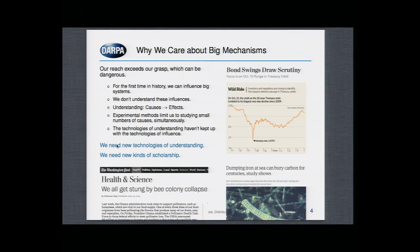Flash crashes are caused by automated trading systems that we don't really understand. In a lot of important domains, we have what we might call component-level understanding, but not system-level understanding. We understand, for example, that iron will cause algae to bloom, and that when the algae die, they sink to the ocean floor and take carbon dioxide with them. So with this component-level understanding of how algae work, we're proposing to dump a lot of iron filings into the ocean to control the climate. What will happen? We don't know. We lack a system-level understanding.